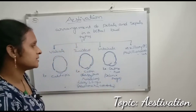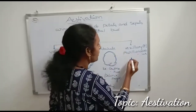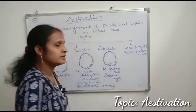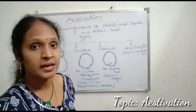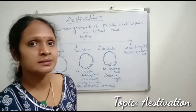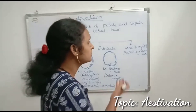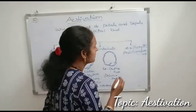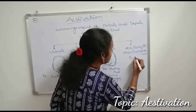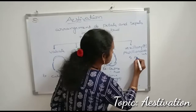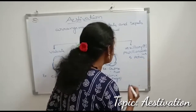The last type is vaxillary or papilionaceae estivation. This type is common in Fabaceae plants — beans and peas belong to Fabaceae. In their estivation, there are five types of petals.